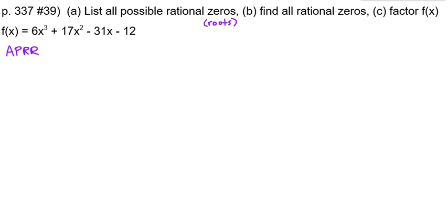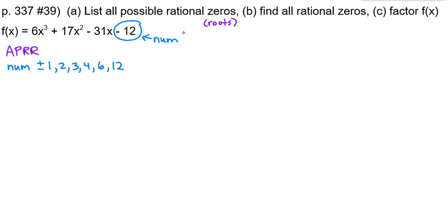To do that, we use the rational root theorem, which tells us that if you look at the constant at the end, its factors will give us the numerators of our rational roots. So the numerators would be plus or minus all the factors of 12: plus or minus 1, 2, 3, 4, 6, and 12. The rational root theorem also says that if you look at your leading coefficient — ours is 6 — you get all the possible denominators by using all the factors of 6: plus or minus 1, 2, 3, and 6.